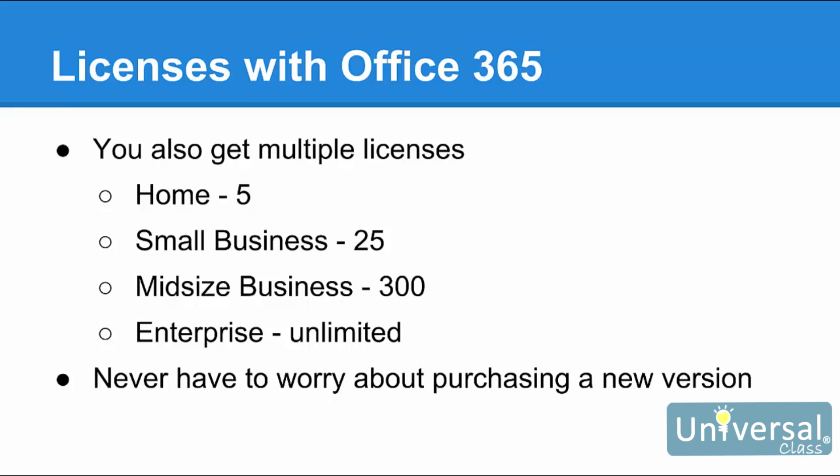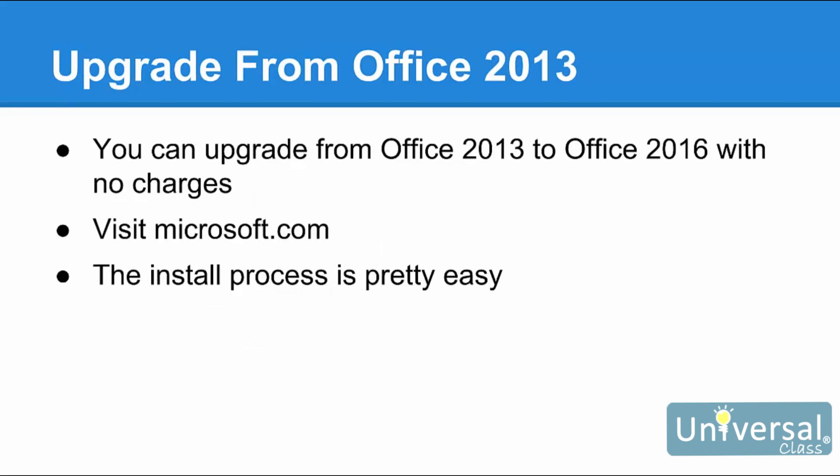There's also an Enterprise version for larger companies that offers unlimited users. Once you subscribe to Office 365, you'll never have to worry about purchasing a new version of Office again. When a new version comes out, you'll be able to update your software by signing into your Microsoft account. To subscribe to Office 365, go to office.products.com. If you're currently an Office 2013 subscriber, you can upgrade to Office 2016 without paying any additional charges. Follow the instructions on the Microsoft.com website. Once you've chosen your version of Office 365 or purchased Publisher, Microsoft will guide you through the installation and setup, doing most of the work for you.